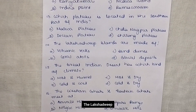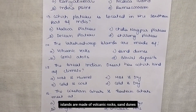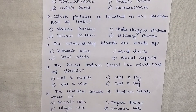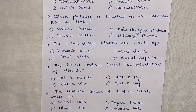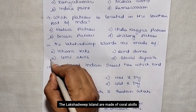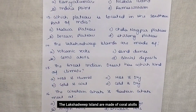The Lakshadweep Islands are made of volcanic rocks, sand dunes, coral atolls, or glacier deposits? The answer is coral atolls. The Lakshadweep Islands are made of coral atolls.